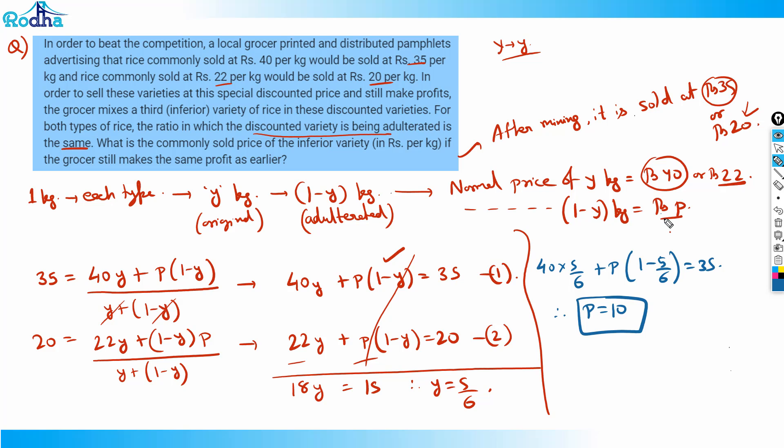The answer would be 10 per kg. That's the answer for this question. Good question, typical CAT level question. The language is a bit tricky. You make a couple of equations, you get the solution. A very general trendy question in CAT these days. I hope you understood it.